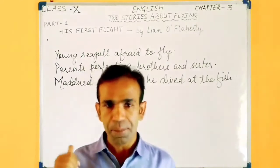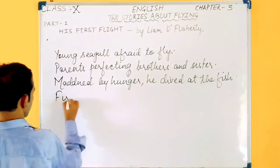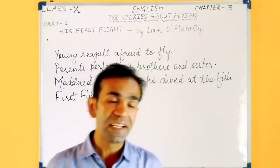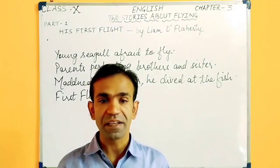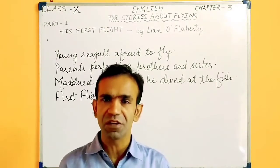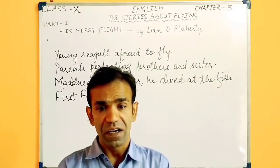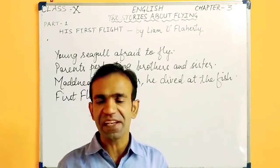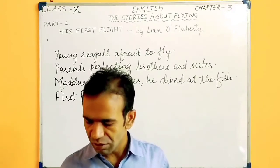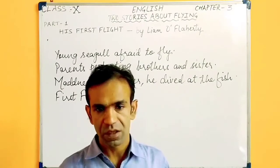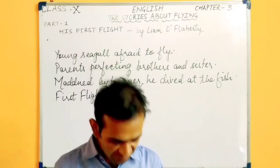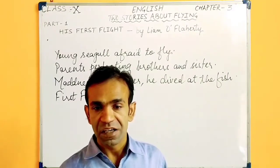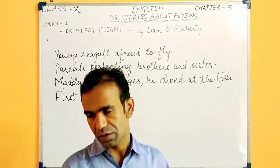Now the final point of this part — his first flight. The seagull completely forgot that he was not able to fly, and left himself free. He soared at will. His parents were beckoning him to fly along with his brothers and sisters. He was tired and weak with hunger. His feet sank into the green sea, and his belly touched it, but he sank no further.